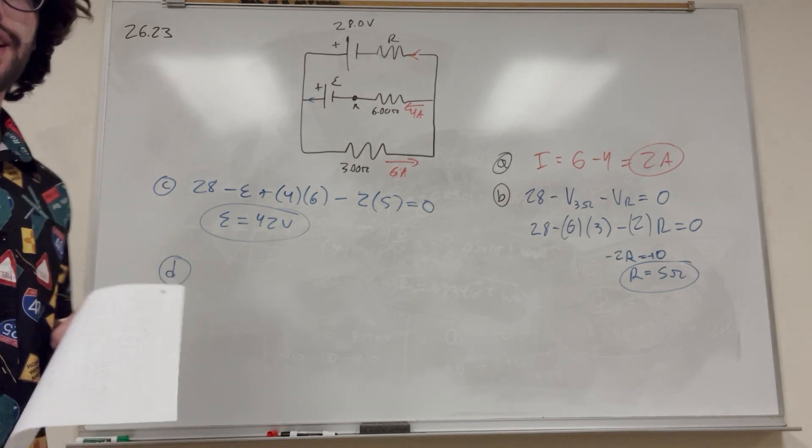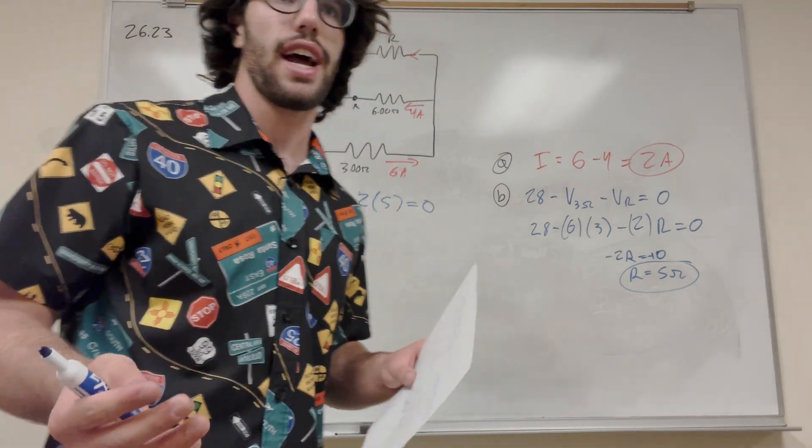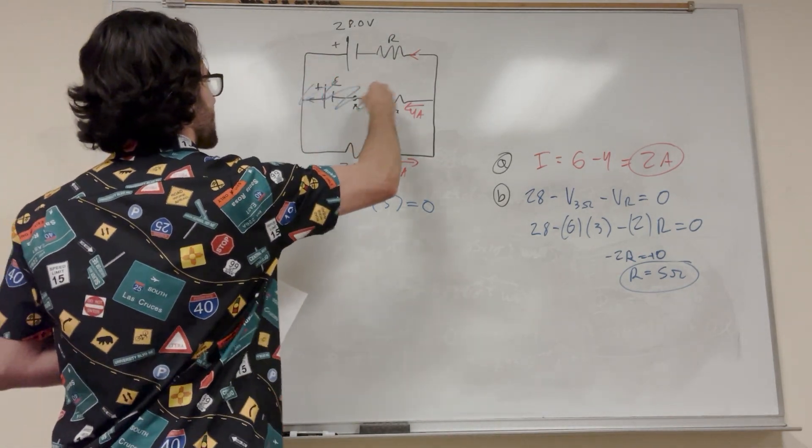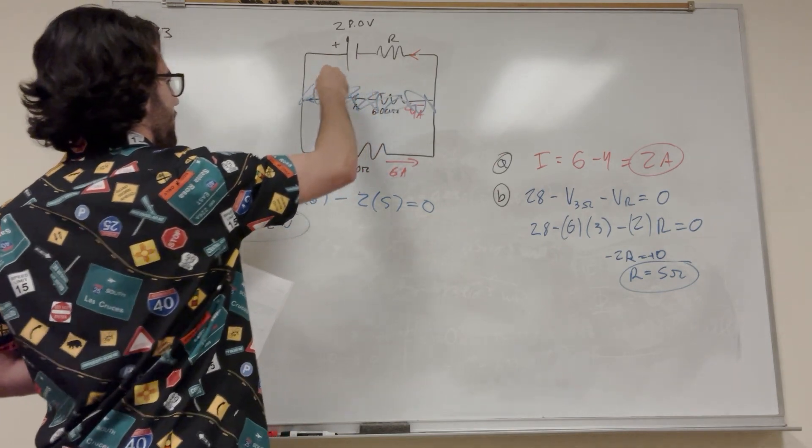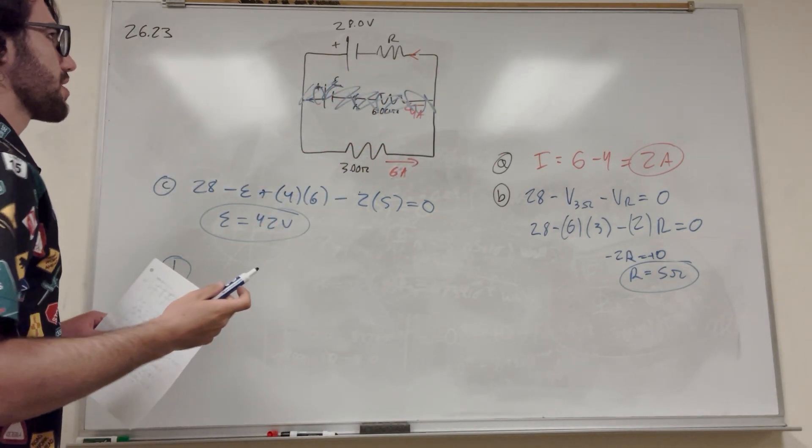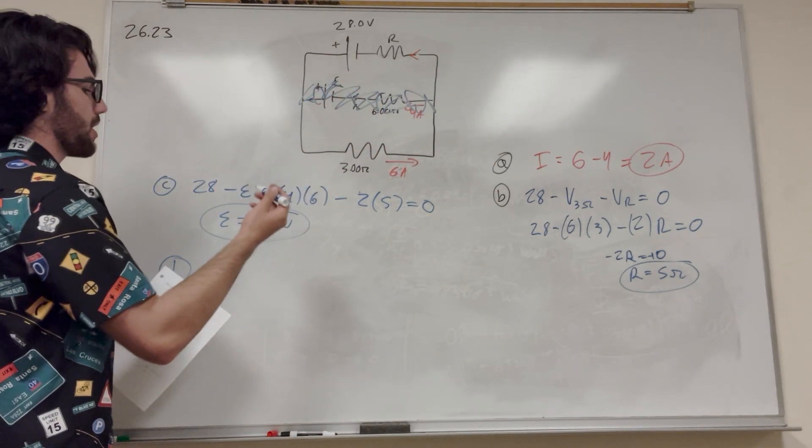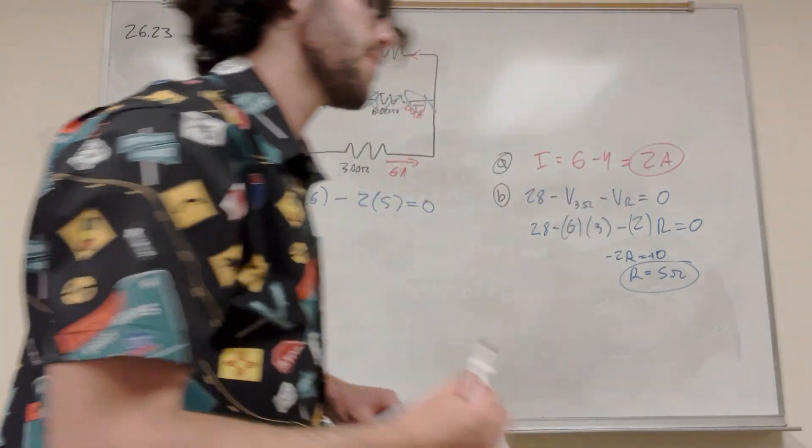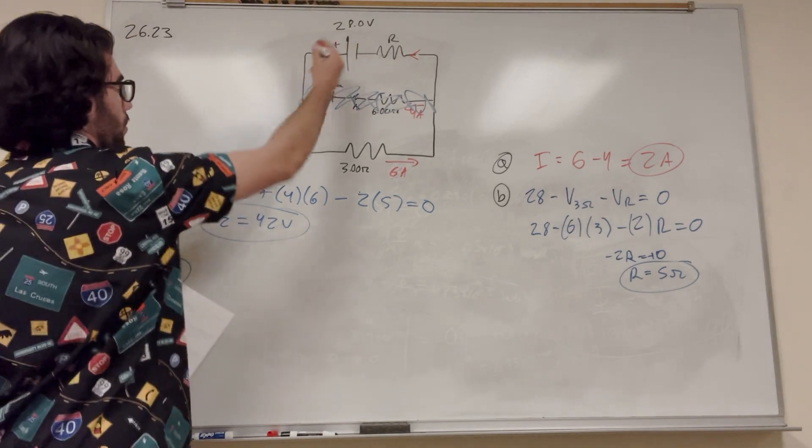So part D is saying, if the circuit is broken in X, then what is the current at resistance R? So we're saying that all of this doesn't exist now, because if this is broken, then it's not going to have any charge through it. So then we're just looking at this. And we don't know what I is yet, because I is going to change if we get rid of one of the batteries. So let's do the whole circuit again.